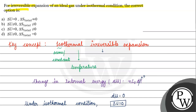So the answer will be option C: change in internal energy is 0 for an irreversible expansion of an ideal gas under isothermal condition, and the total entropy of the universe is always increasing in the case of irreversible processes. I hope you understood it well. Thank you.